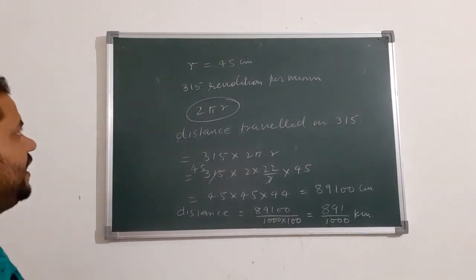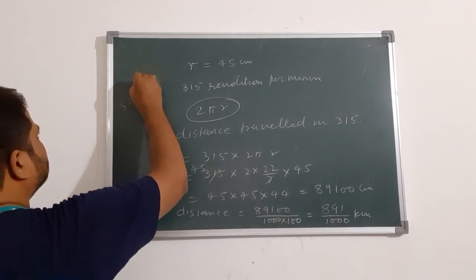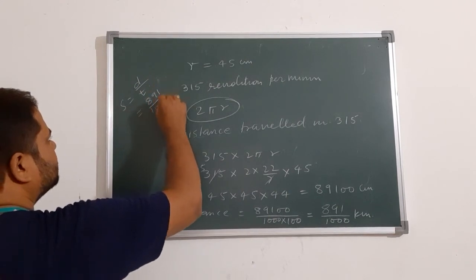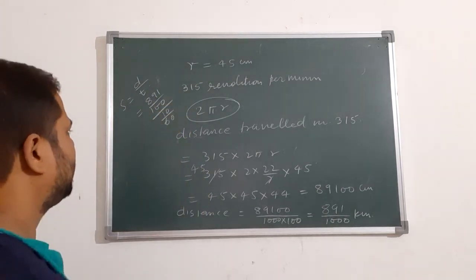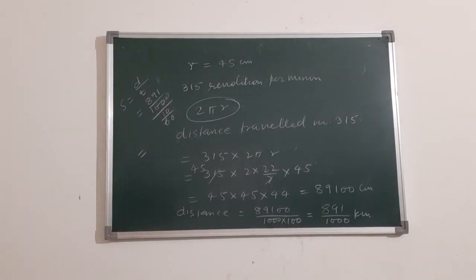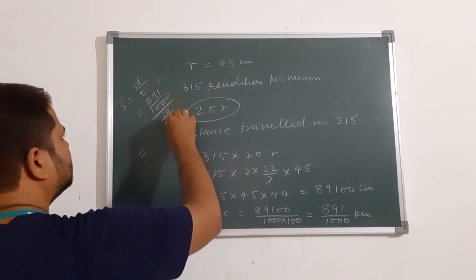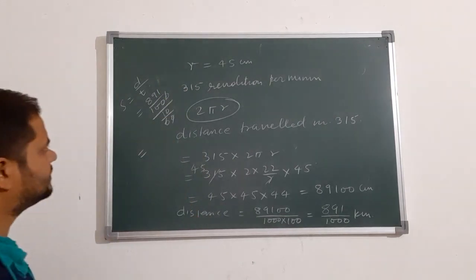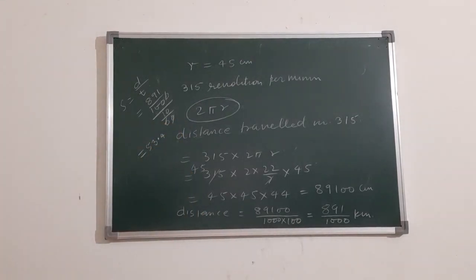And we have to find speed. So if we find speed, speed is distance over time. So distance is 891 upon 1000, and time is 1 by 60. Because this is minute, we can convert it in hours. And we will get 53.46 kilometer per hour.